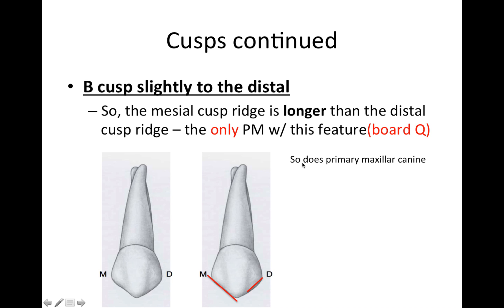In addition, the only other tooth that shares this feature — where the mesial cusp ridge is longer than the distal — is the primary maxillary canine.